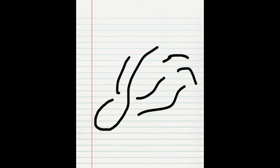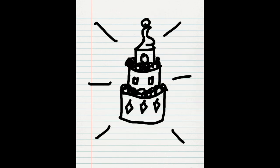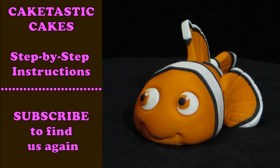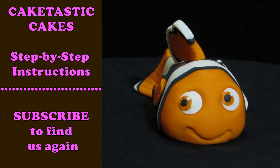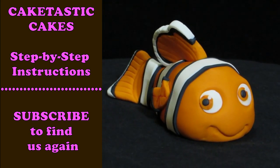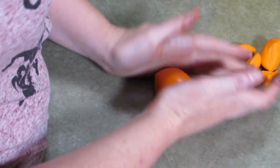Hello, everybody. Welcome to Caketastic Cakes again. It's Jen. I'm back. I'm going to show you today how to make Nemo from Finding Nemo or Finding Dory, because they're always finding things. And he's gum paste. He's cute. And if you like it, please like and subscribe. So here we go.